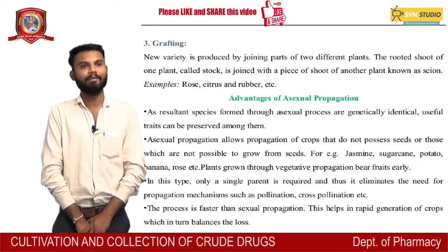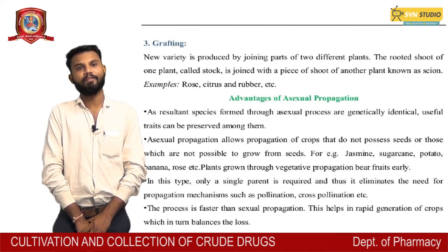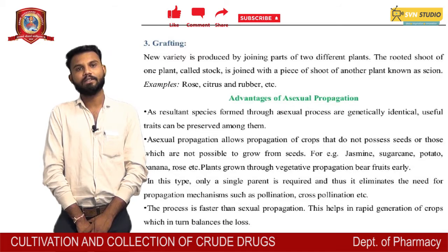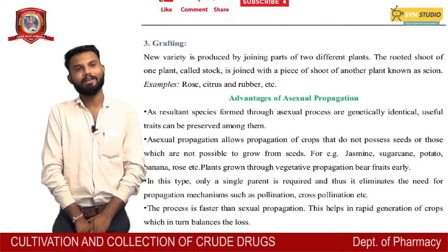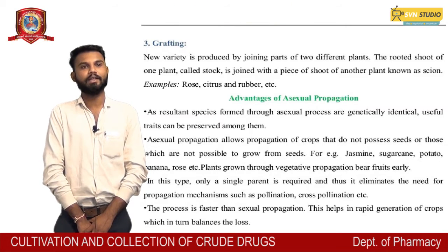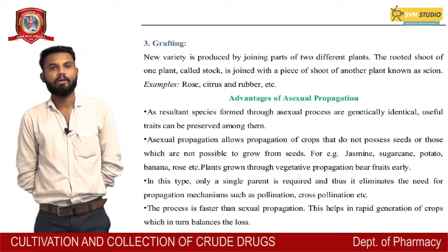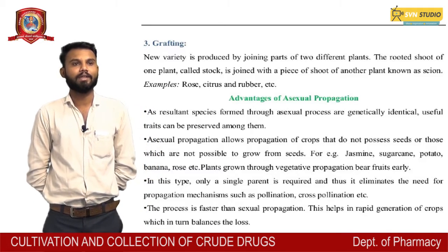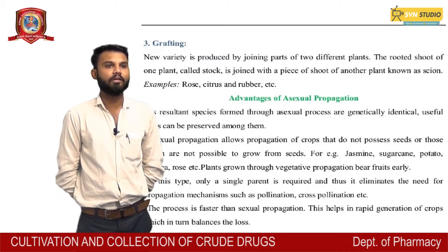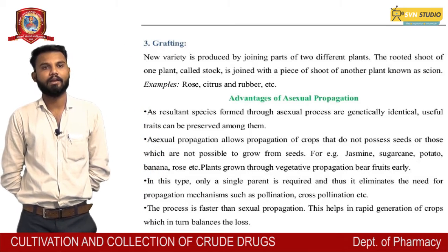3. Grafting — new varieties are produced by joining parts of different plants. The root shoot of one plant, called the stock, is joined with a piece of shoot of another plant known as the scion, e.g., rose, citrus, and rubber.